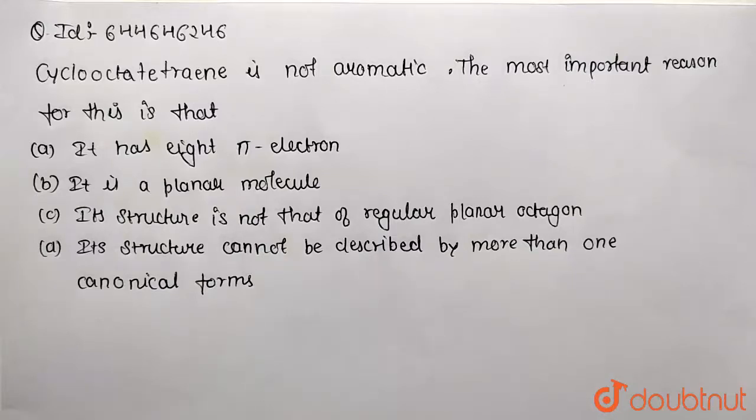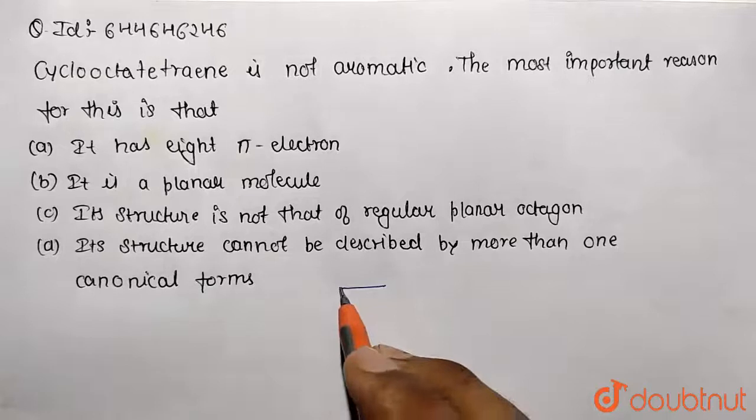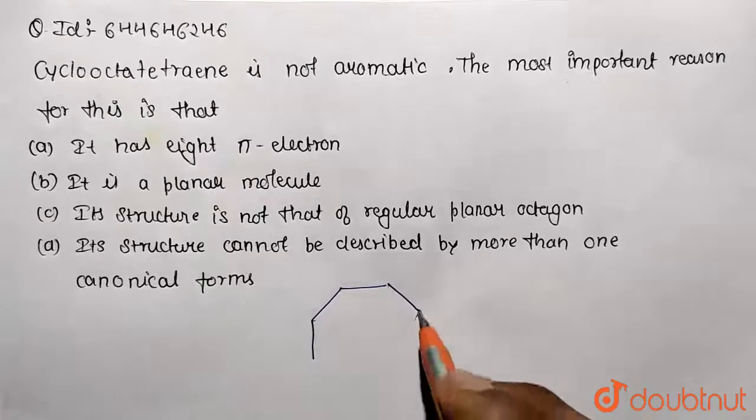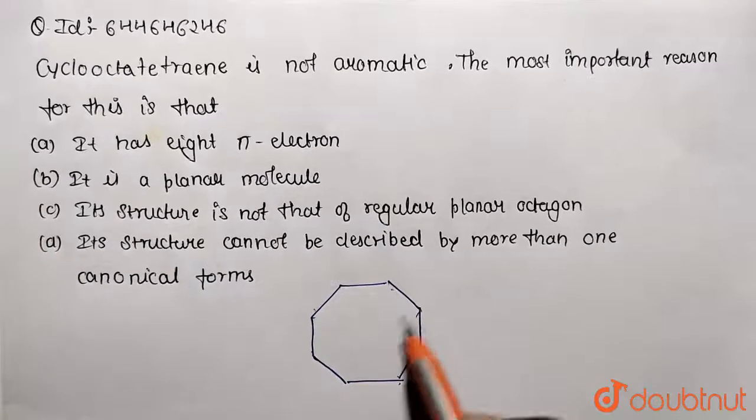Canonical means resonance. So first of all draw the cyclooctatetraene: 1, 2, 3, 4, 5, 6, 7, and correspondingly 8. So this is our octane.